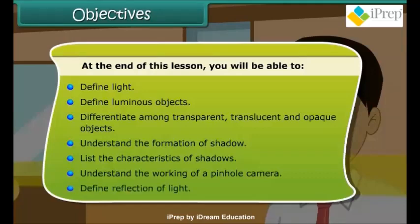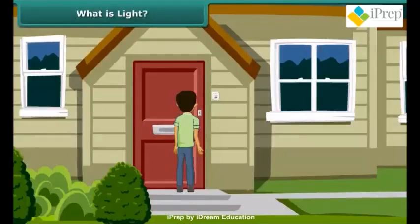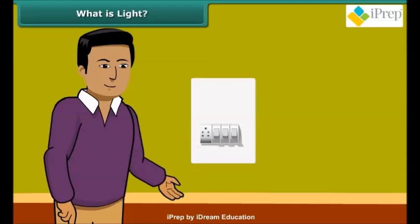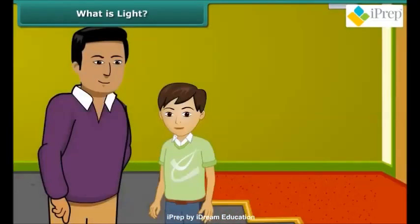It's night and you step inside the house. There is darkness all around and everything appears black. You can hardly see anything. Your father switches the light on and now you can see everything clearly. This means light enables viewing.